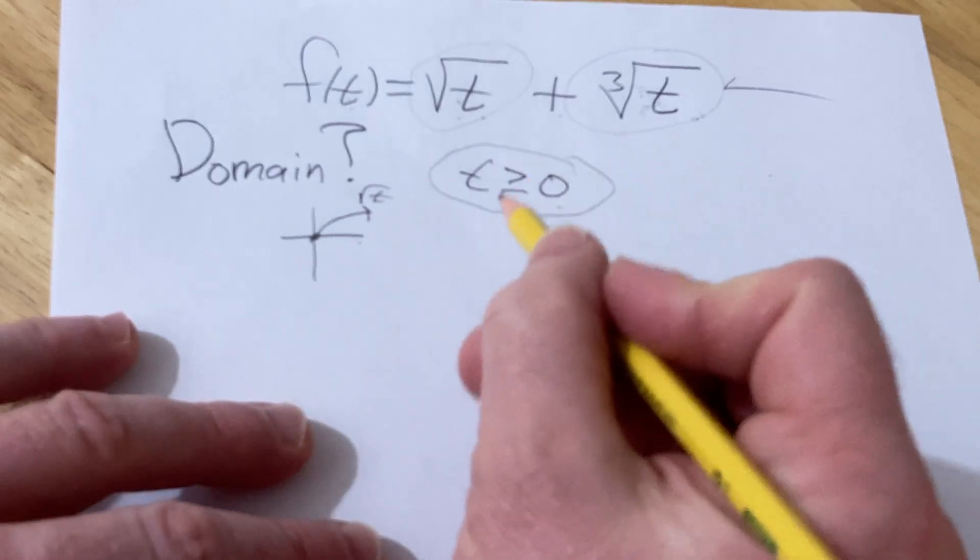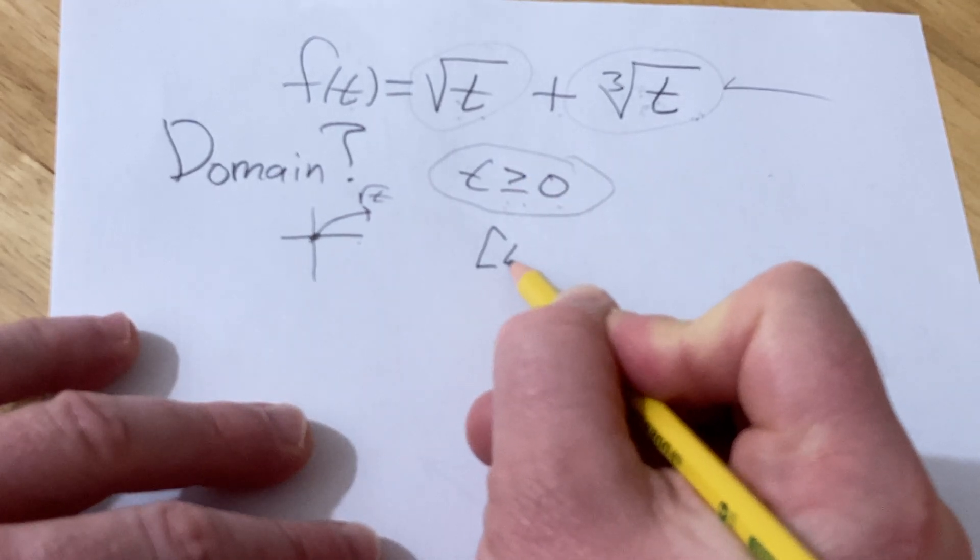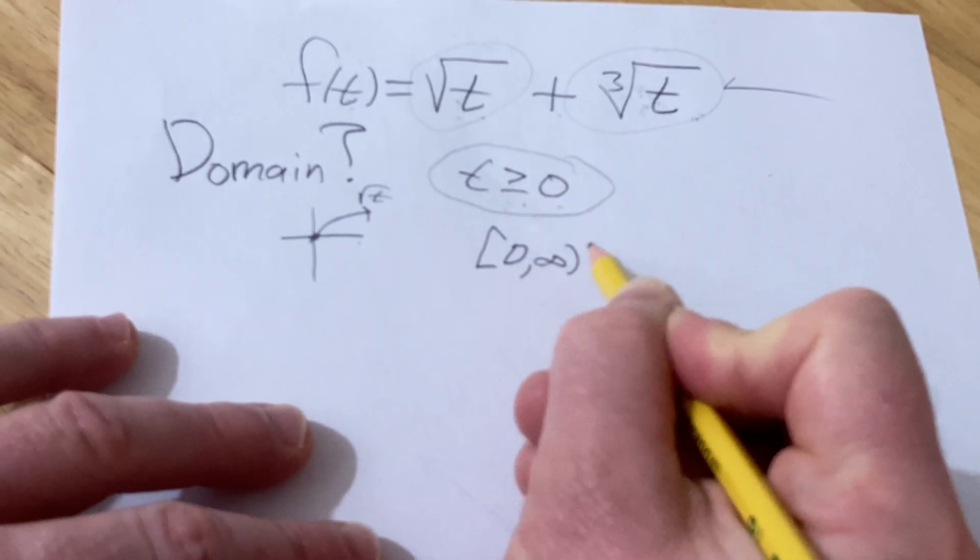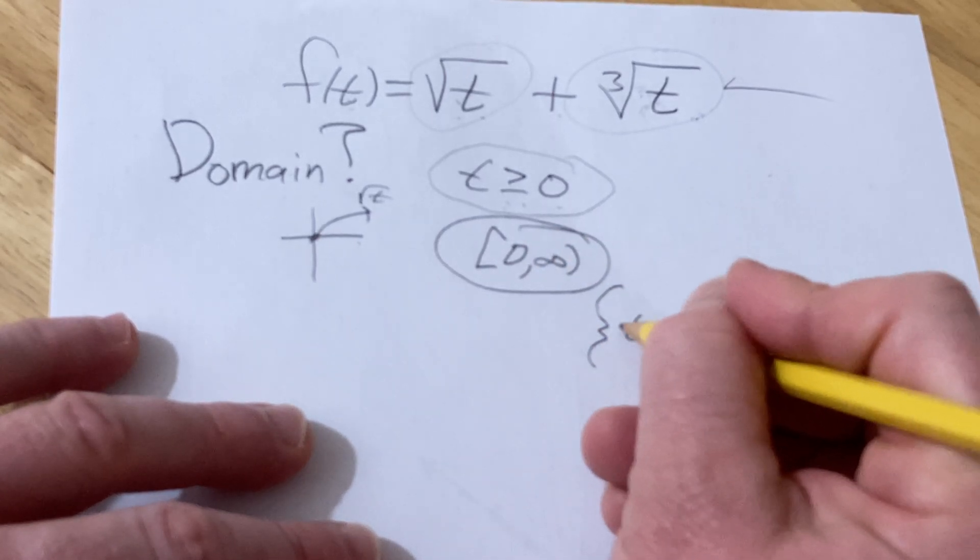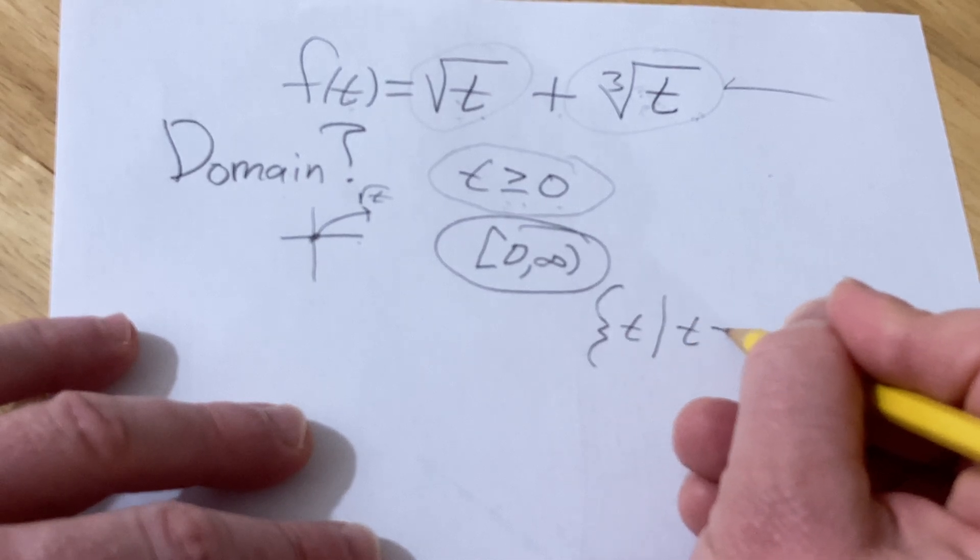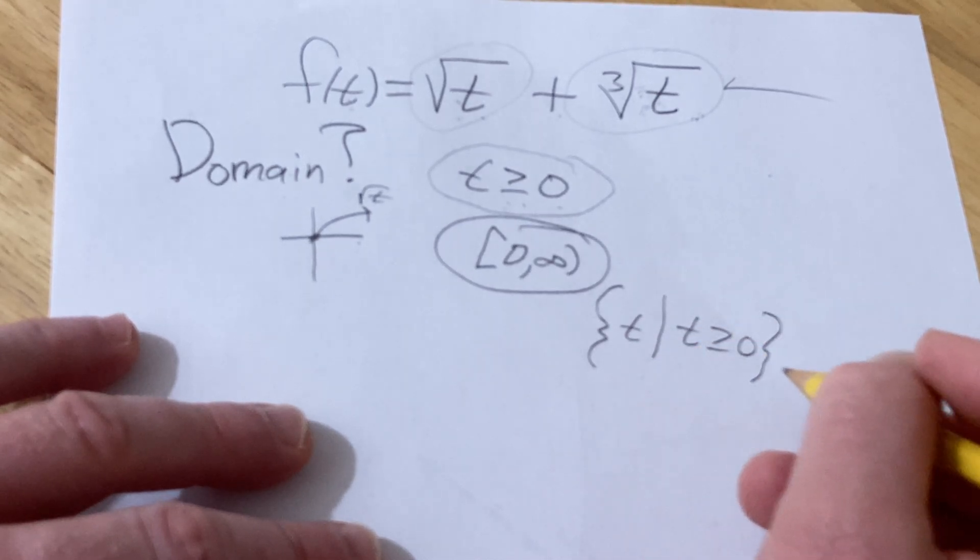There's a couple ways to write your answer. You can write it like this, zero to infinity. That would be a good answer. You can also use set-builder notation to say the set of all t's such that t is greater than or equal to zero. That would work as well.